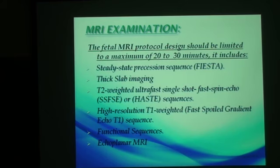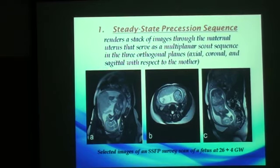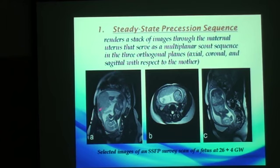The steady-state precession sequence is the scout sequence we use. It renders a stack of images through the maternal uterus in different planes, providing multiplanar images in sagittal, axial, and coronal views. It has a slice thickness of 6 to 8 millimeters with a 1 to 2 millimeter gap. CSF gives a hyperintense signal, which delineates the anatomical features of the fetus as we see here.